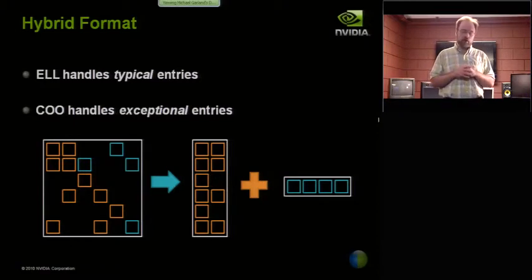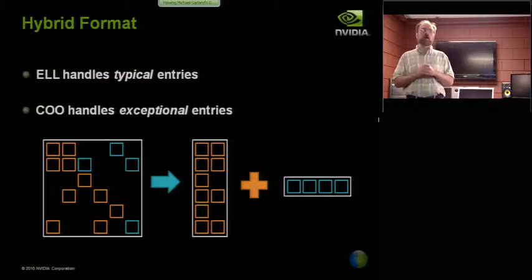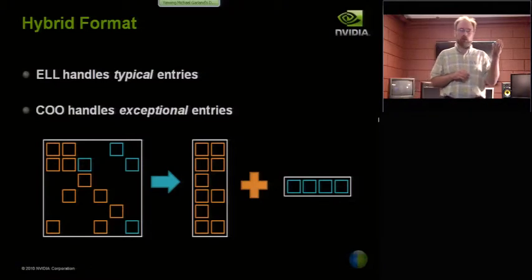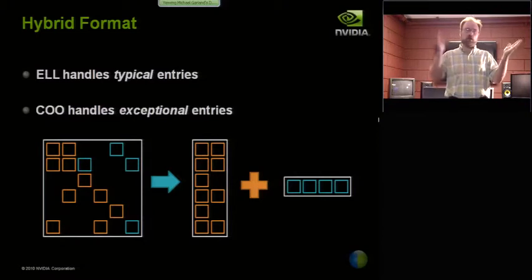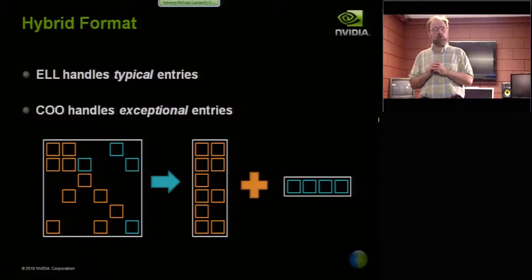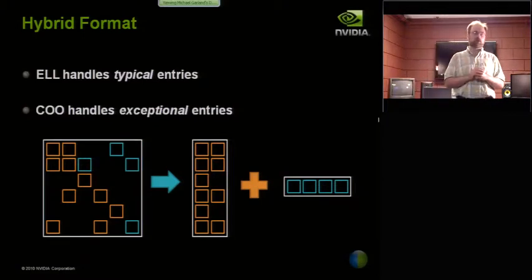I told you earlier that irregularity is fine if the regular case is the common case, and this is an example of exactly that. The ELL kernel I told you about gets very good memory access patterns. The problem is it wastes space if some rows are very long with respect to others.